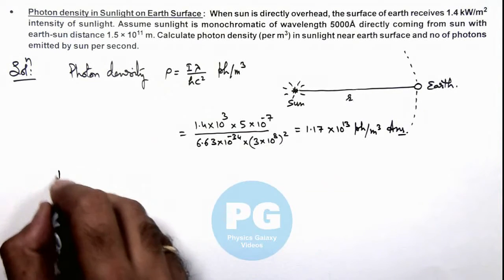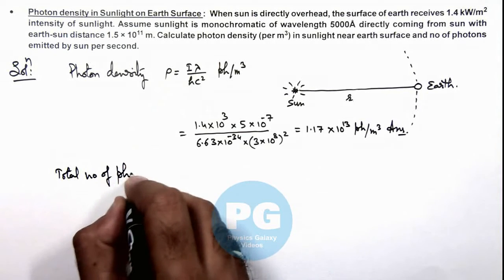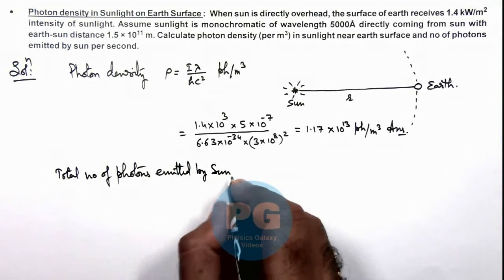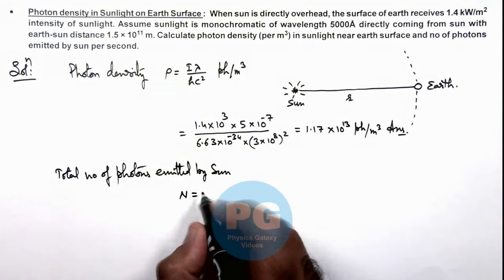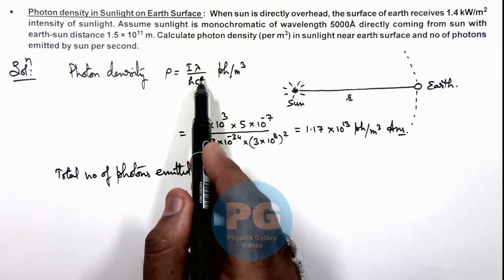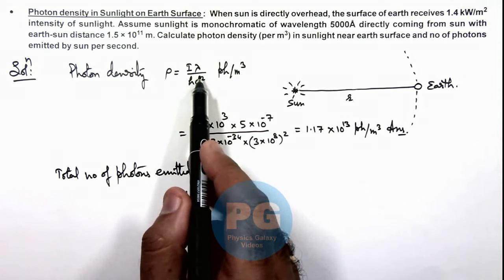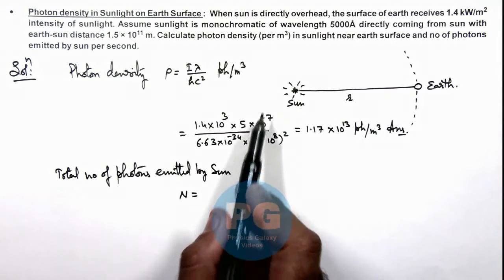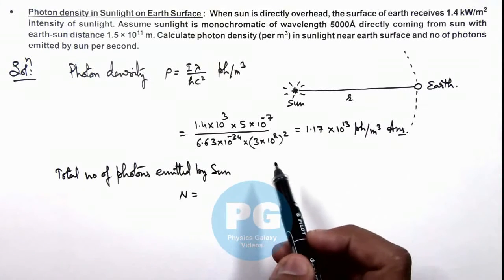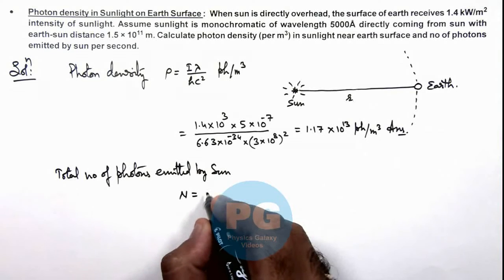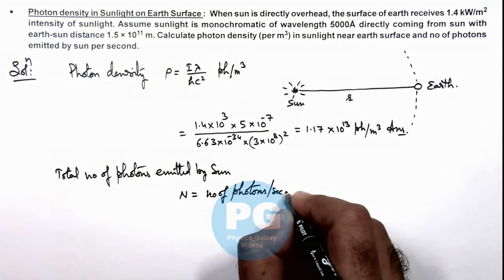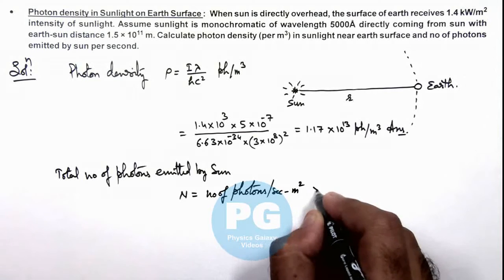If we calculate the total number of photons emitted by the sun, the total number of photons will be photon density ρ — the number of photons per meter cube — multiplied by c, which gives the number of photons per second, and this should be multiplied by the total area of this hypothetical spherical surface of radius r with center at the sun. So the number of photons per second per meter square on Earth, multiplied by 4πr².